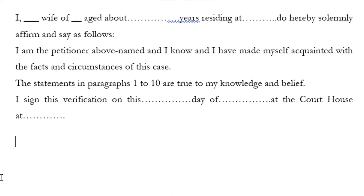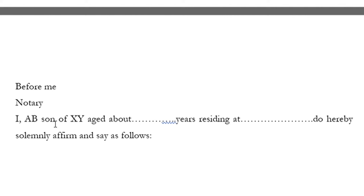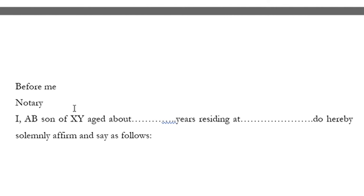Verification. I, Fulandevi, wife of Fuldev, aged about [X] years, residing at [address], do hereby solemnly affirm and state as follows. I am the petitioner above named and I know and have made myself acquainted with the facts and circumstances of this case. The statements in paragraphs 1 to 10 are true to my knowledge and belief. I sign this verification on this day of [date] at the courthouse at [place].